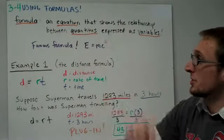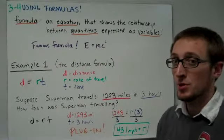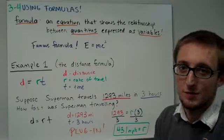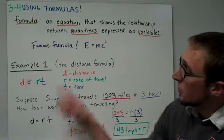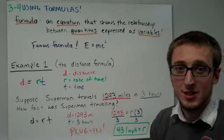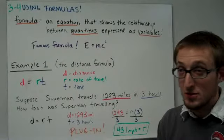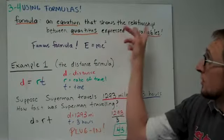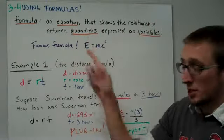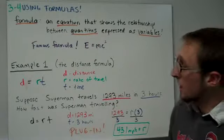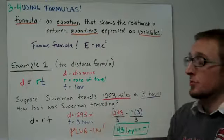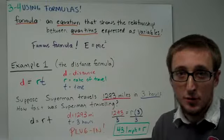A formula is an equation that shows the relationship between quantities that are expressed as variables. Remember, an equation is basically any math sentence that has an equal sign, so a formula has to have an equal sign. It's showing a relationship between quantities, which are basically just numbers, and those numbers are expressed as variables. A variable is a letter that represents a number.